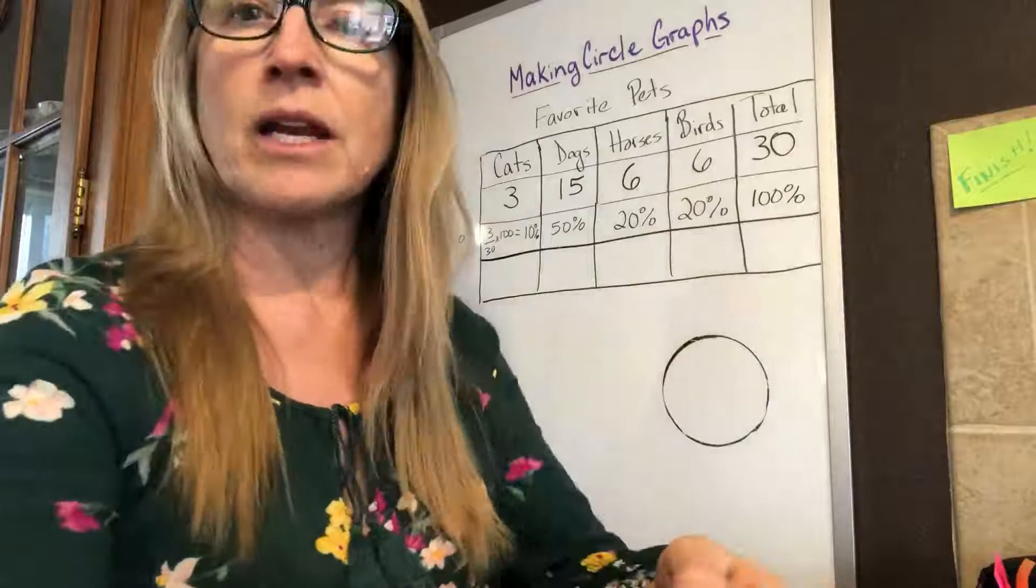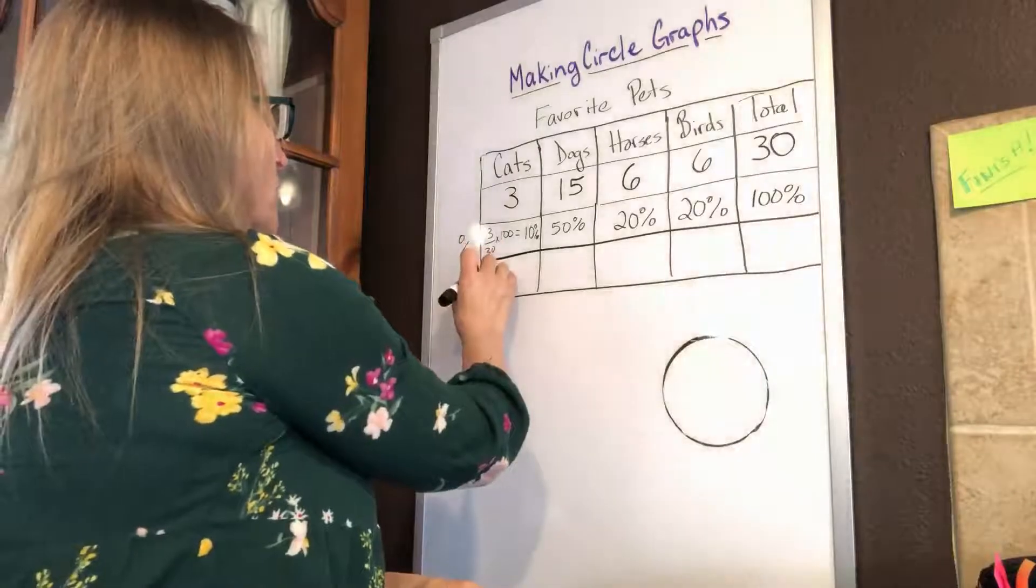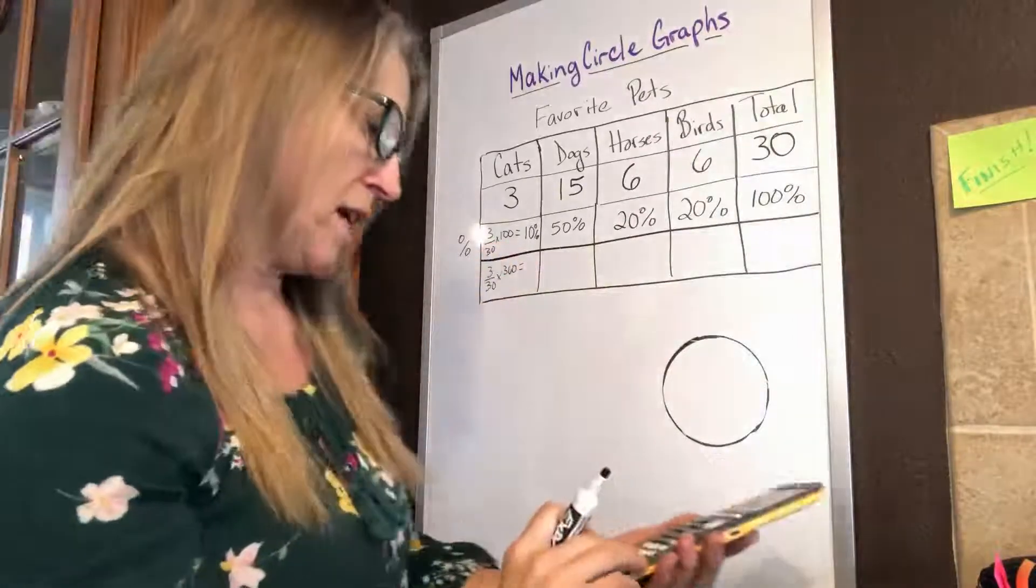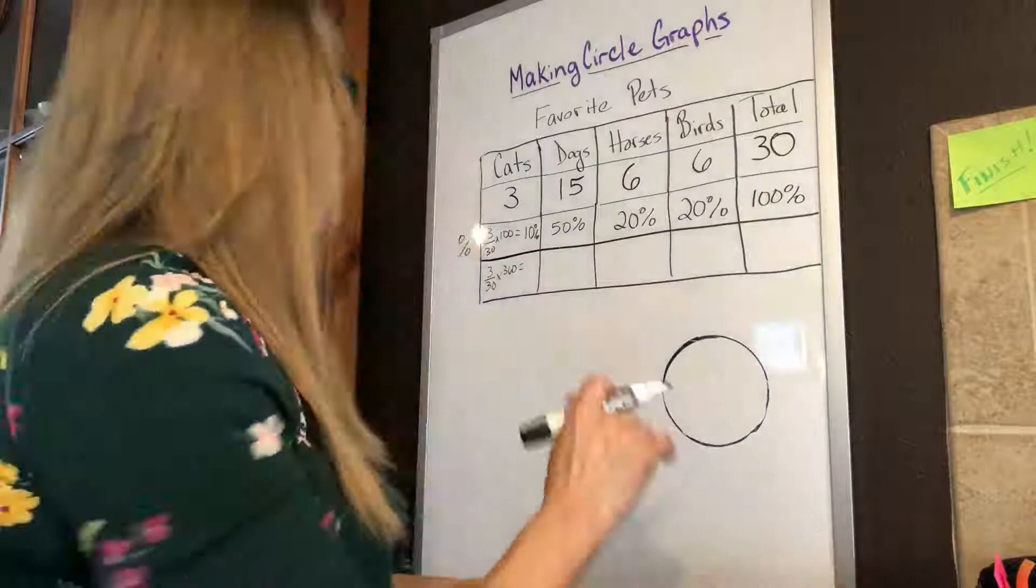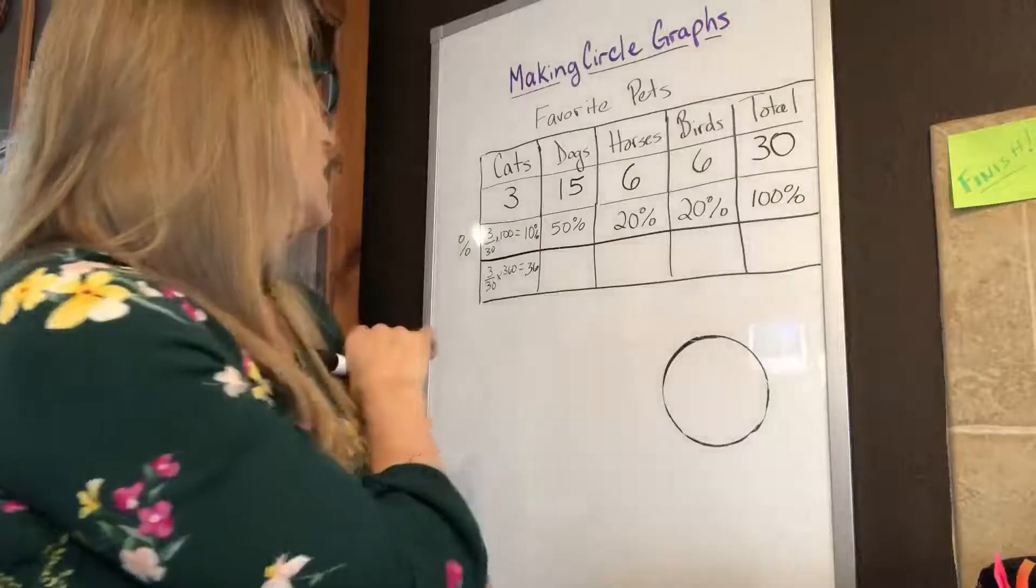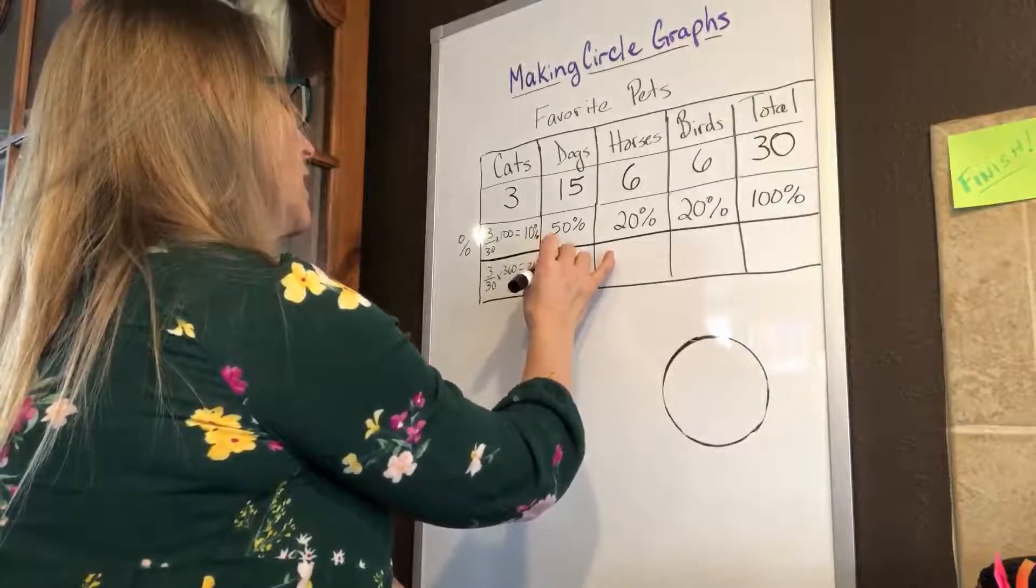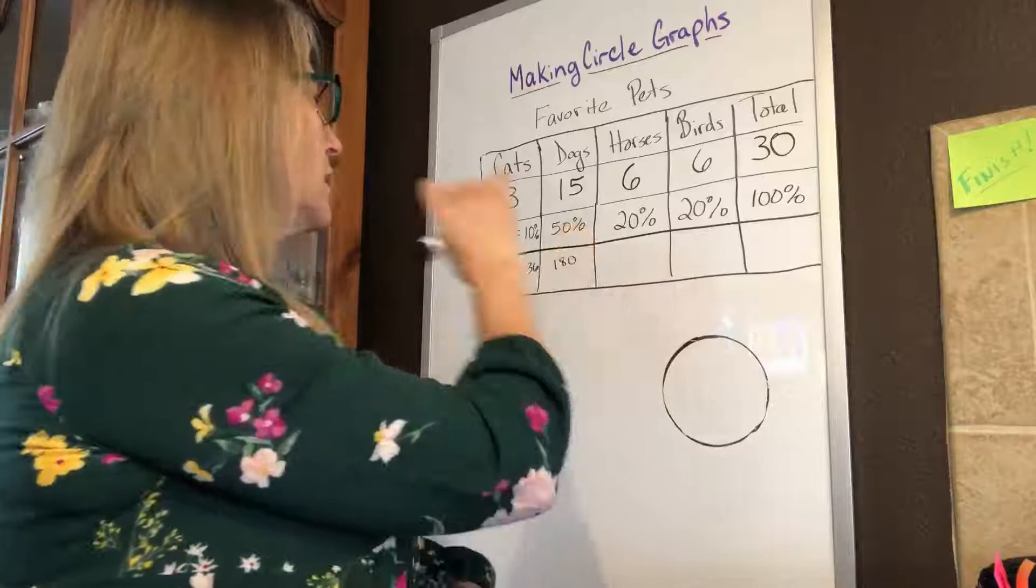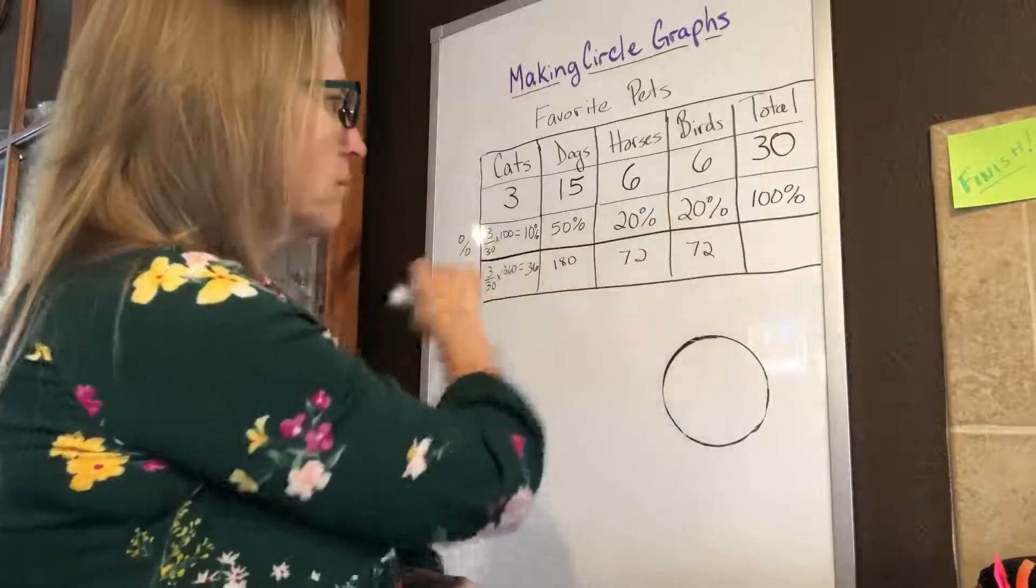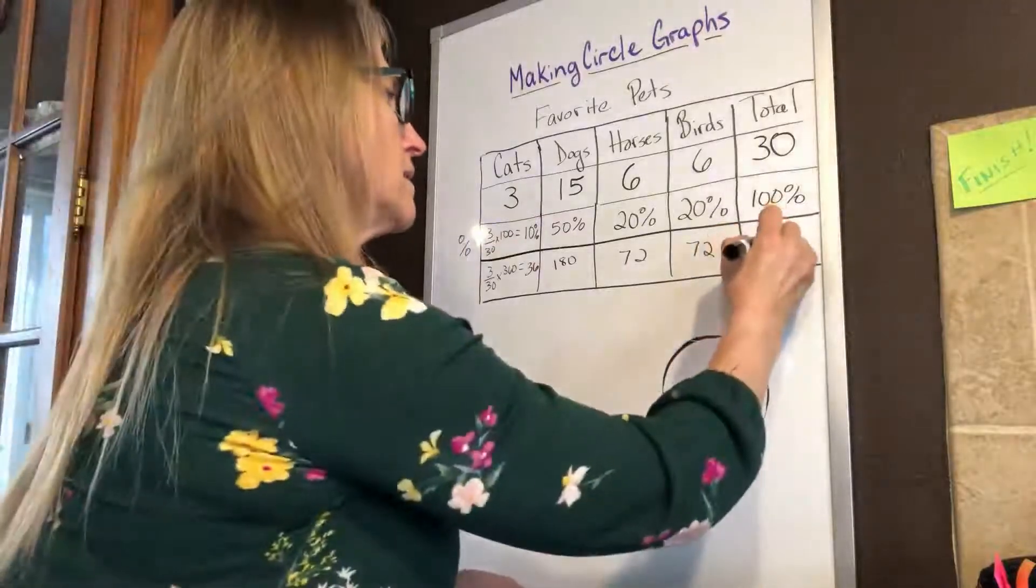The next thing we're going to do is make some calculations for the degrees of my circle. So I'm going to go three divided by 30, and I have to multiply that by my 360 degrees. So I have my 0.1 times 360, which is just going to give me 36. Then this is going to be 180. And this is going to be 72 and 72. And when I add all those up - 72 plus 72 plus 180 plus 36 - I should get 360.